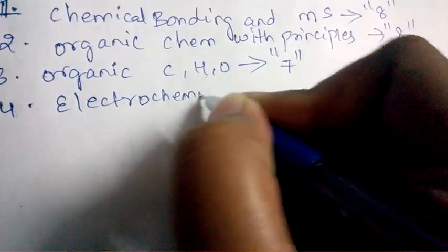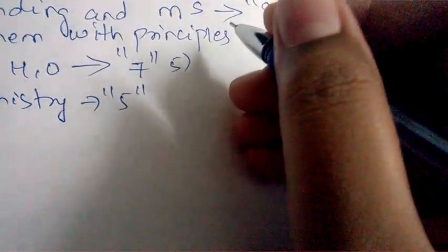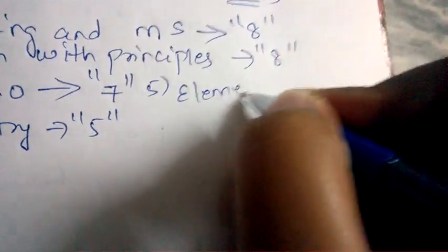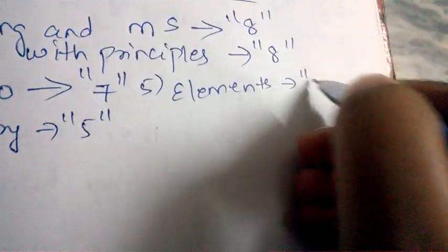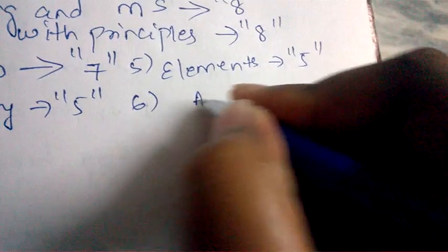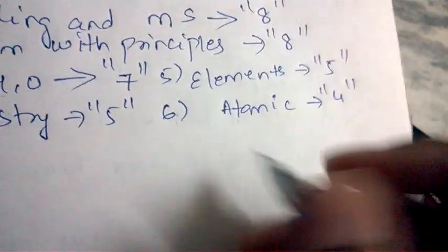Next is Electrochemistry. From this chapter, five questions will be asked. Next important chapter is Classification of Elements. From this chapter, five questions will be asked. Next is Atomic Structure. From this chapter, four questions will be asked.